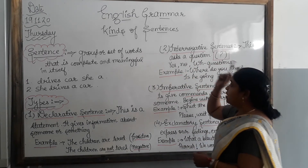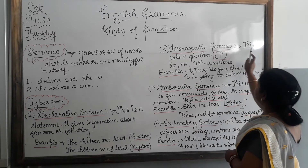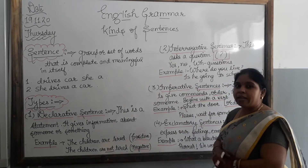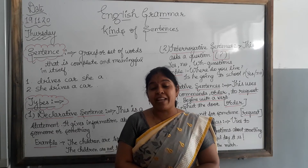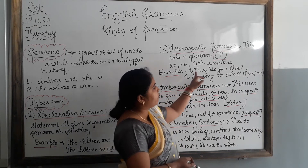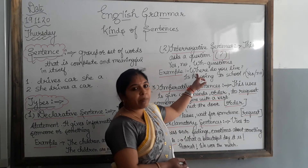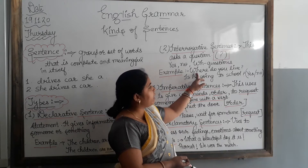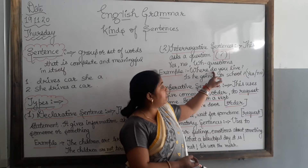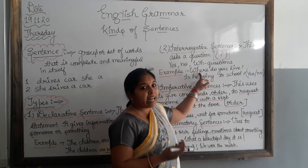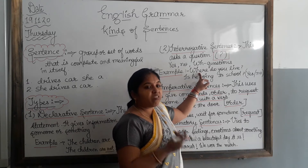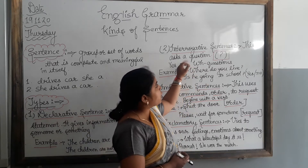The second type is interrogative sentences. Interrogative sentences ask a question, and we put a question mark at the end of the sentence so we can easily identify it as an interrogative sentence. For example: 'Where do you live?' We can make interrogative sentences with the WH family. In the WH family we have words such as who, what, where, when, how, which, and whose. With these words we can make interrogative sentences.